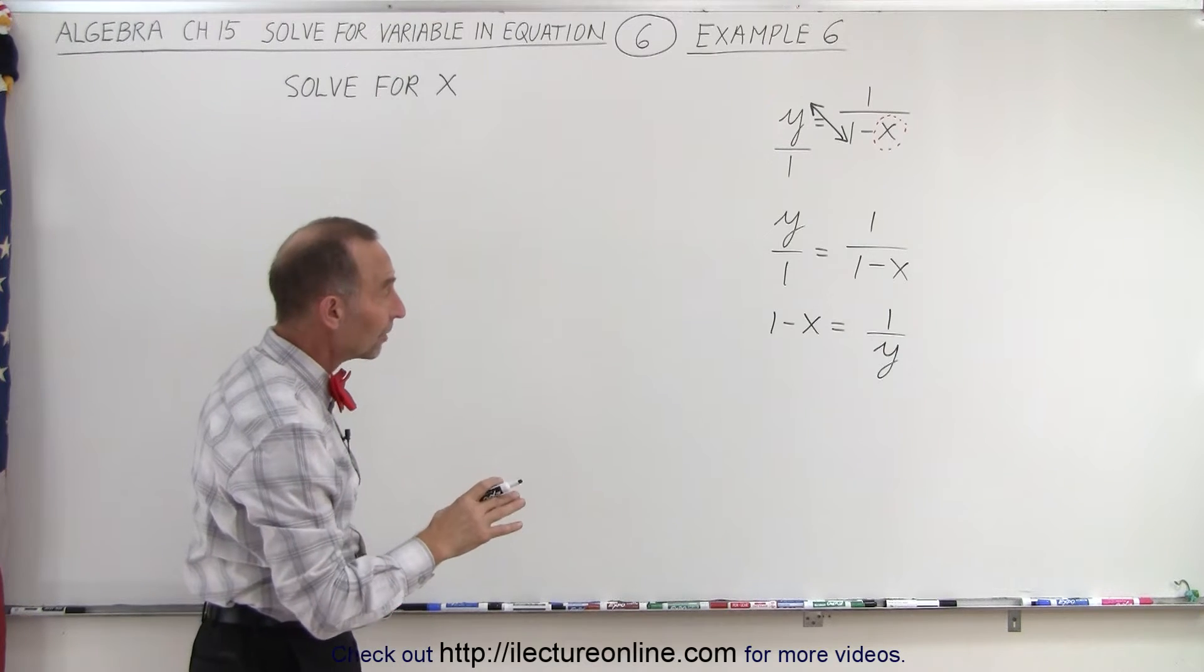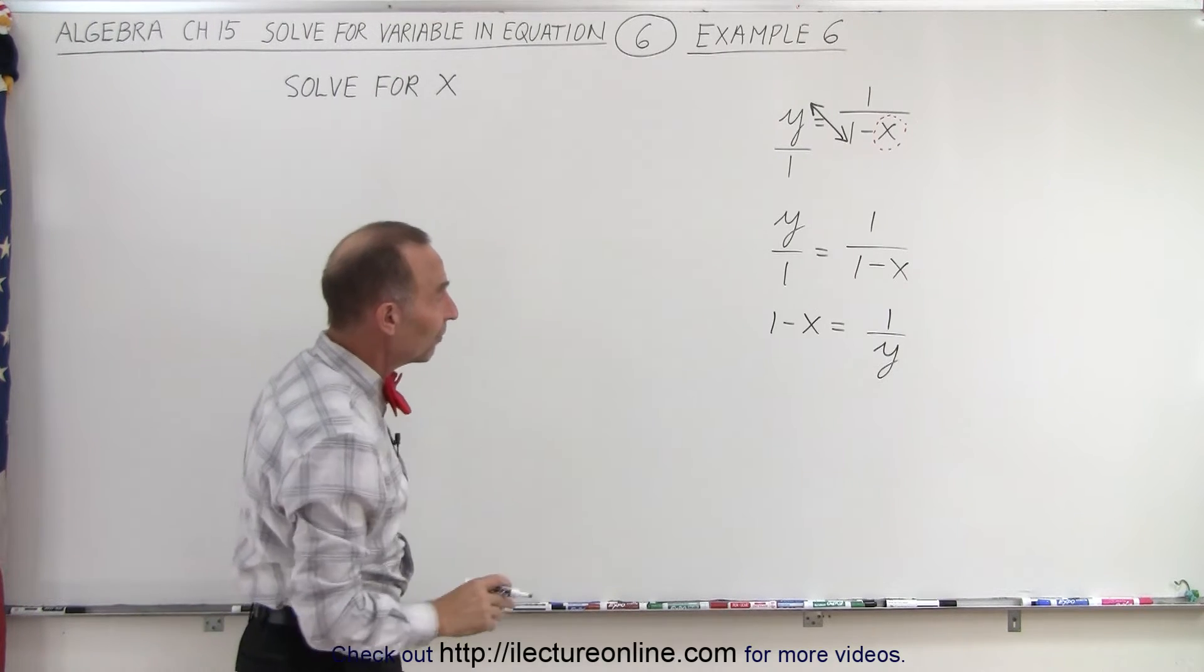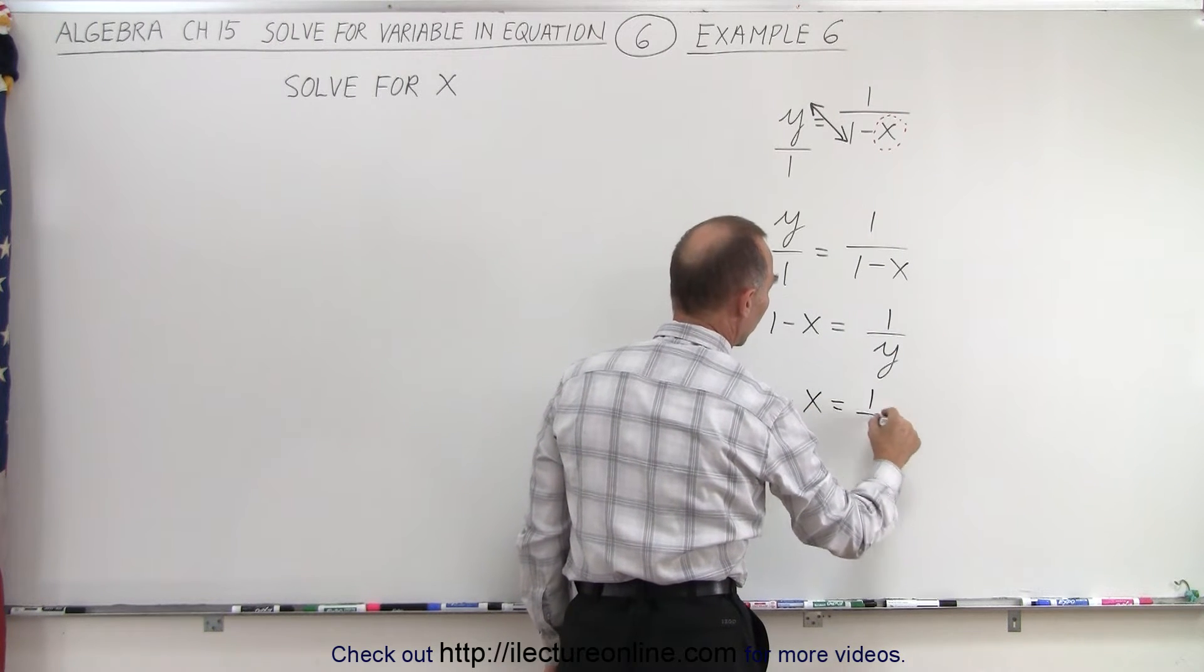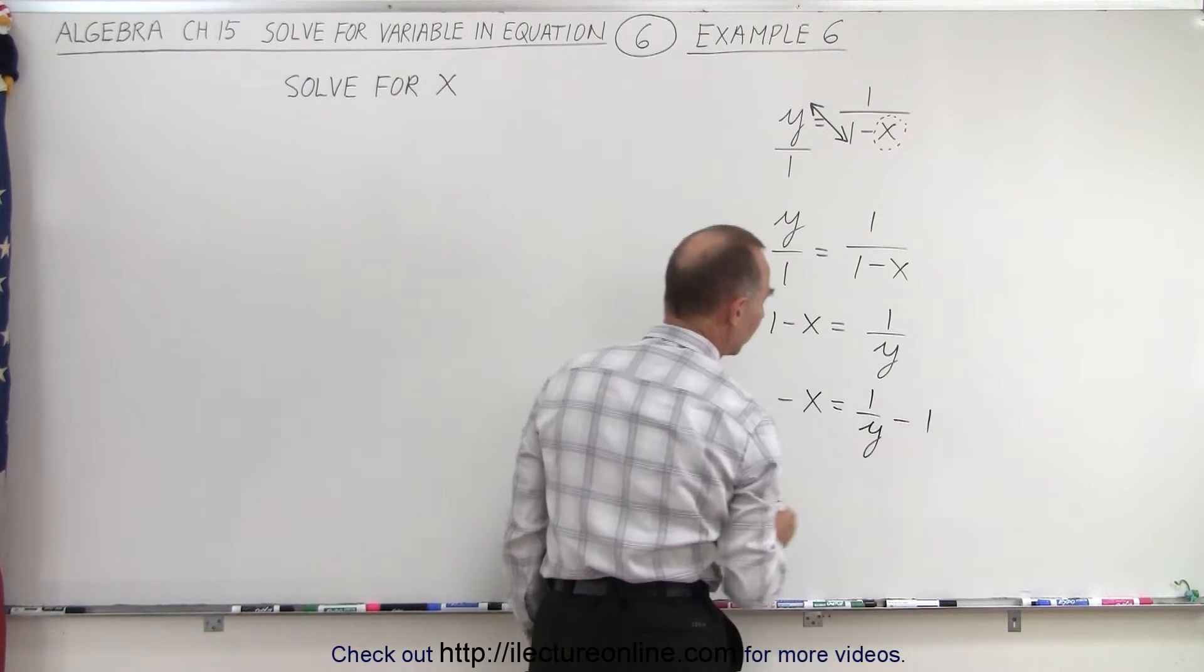Since we're looking for x, we need to get rid of the 1 on the left side, so we're going to subtract 1 from both sides. We get minus x is equal to 1 over y minus 1.